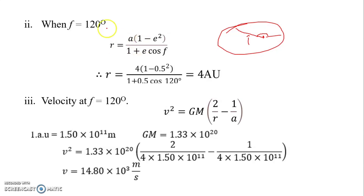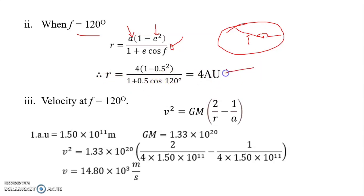We substitute f = 120° into the orbit equation. We know a = 4 AU and e = 0.5. Using a calculator, we obtain r = 4 AU. So the distance from the Sun at f = 120° is 4 AU.